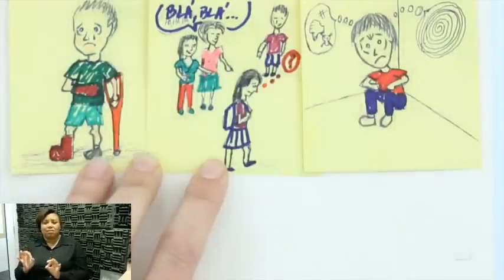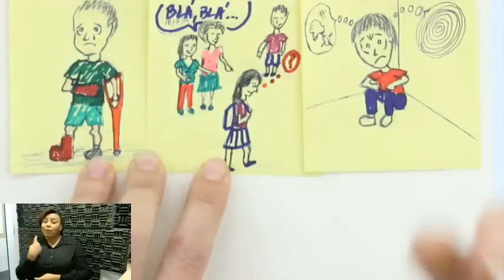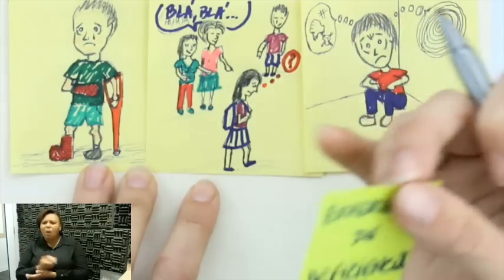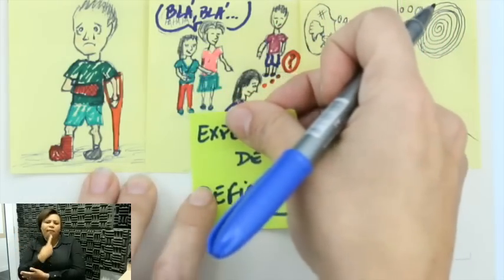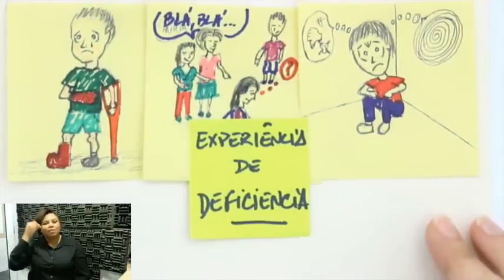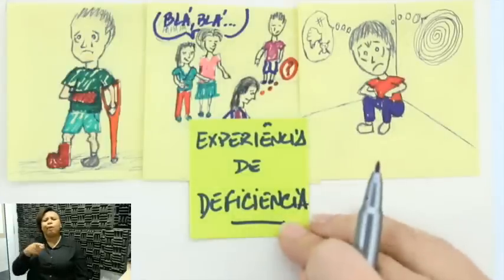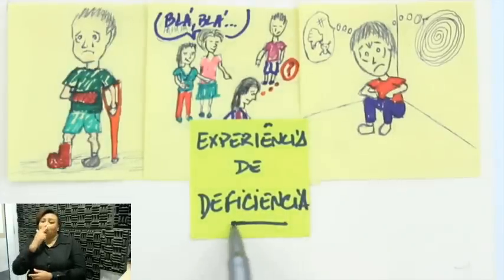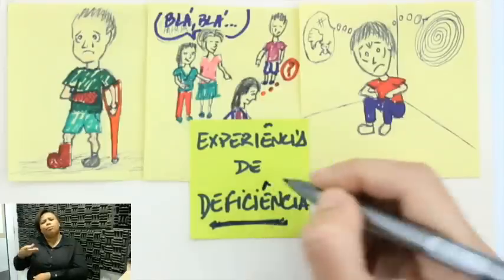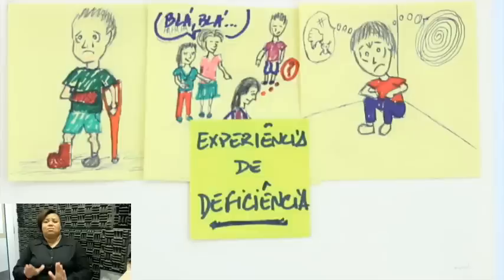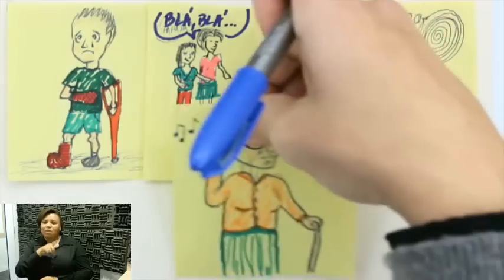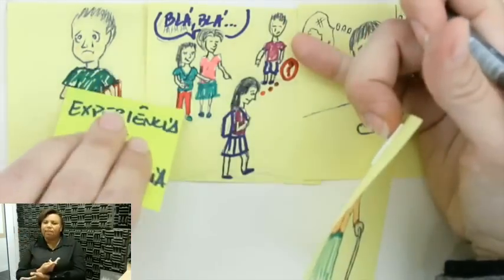Todas essas situações — a gente fala que nós, pessoas que achamos que não temos deficiência nenhuma, já passamos ou iremos passar alguma vez na vida. A gente acaba tendo uma experiência de deficiência. Isso aí é passageiro, não é a mesma coisa do que ter uma deficiência. As pessoas com deficiência passam por isso por longos períodos de tempo, ou ao longo de toda a vida. Mas mesmo nós, que nunca passamos por alguma coisa assim, um dia vamos ter essa experiência de deficiência.